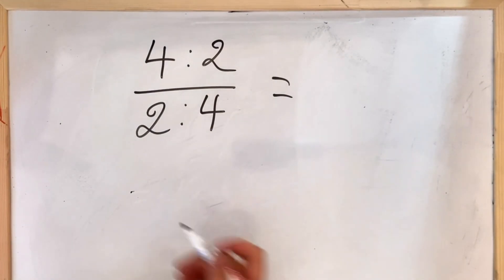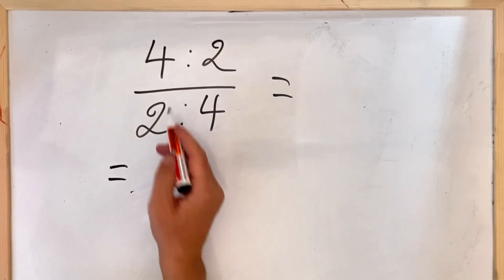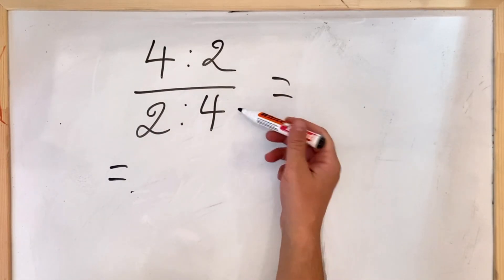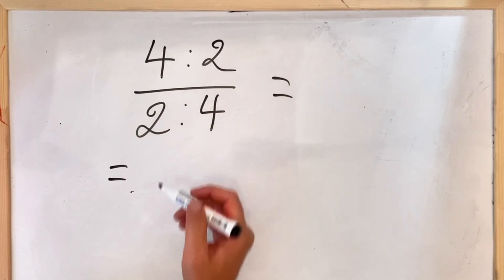So what we do, we first calculate what's on the numerator and then we do the denominator. So in this case we have: